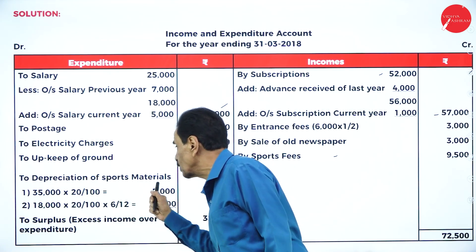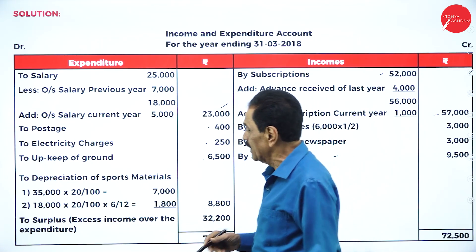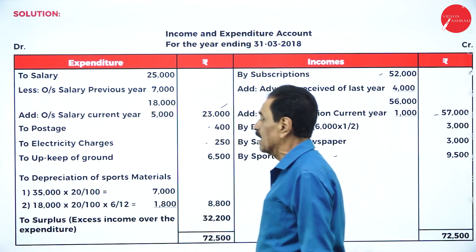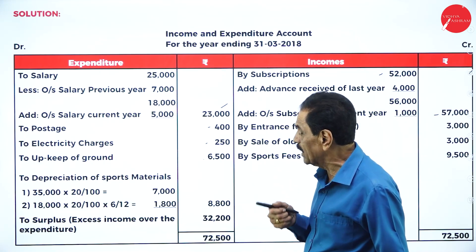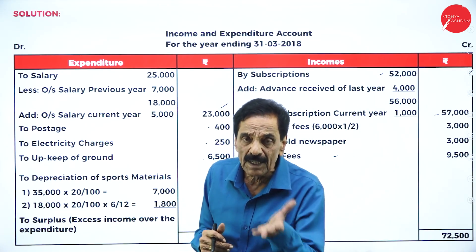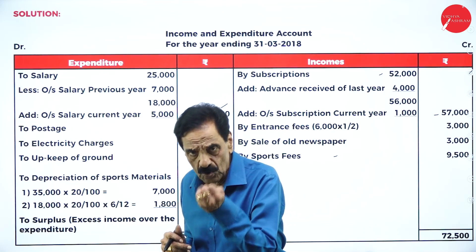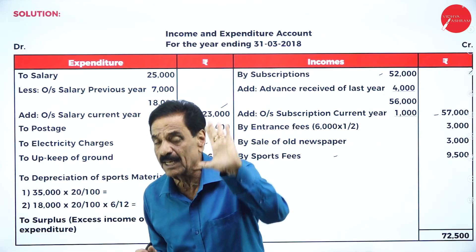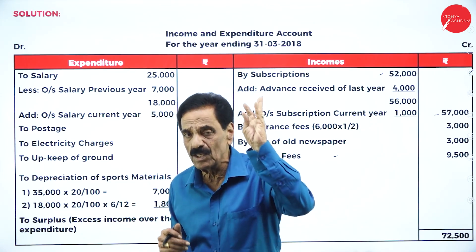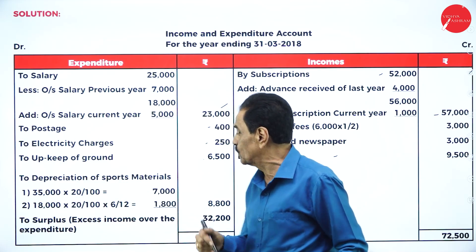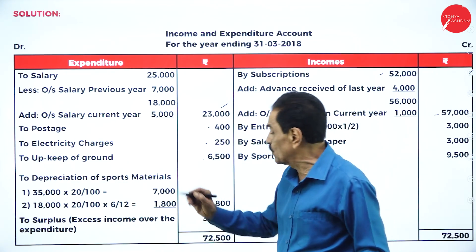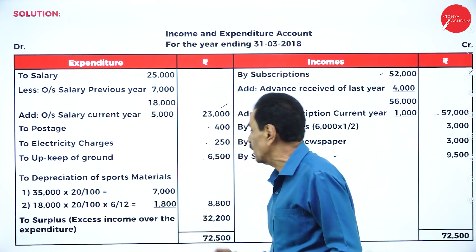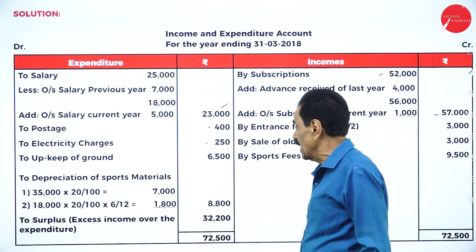For depreciation on sports material: the opening balance sheet shows 35,000, which remains for the full year — 35,000 × 20/100 = 7,000. New material purchased on 1/10 worth 18,000 remains for six months (October, November, December, January, February, March). So 18,000 × 20/100 × 6/12 = 1,800. Total depreciation is 8,800.